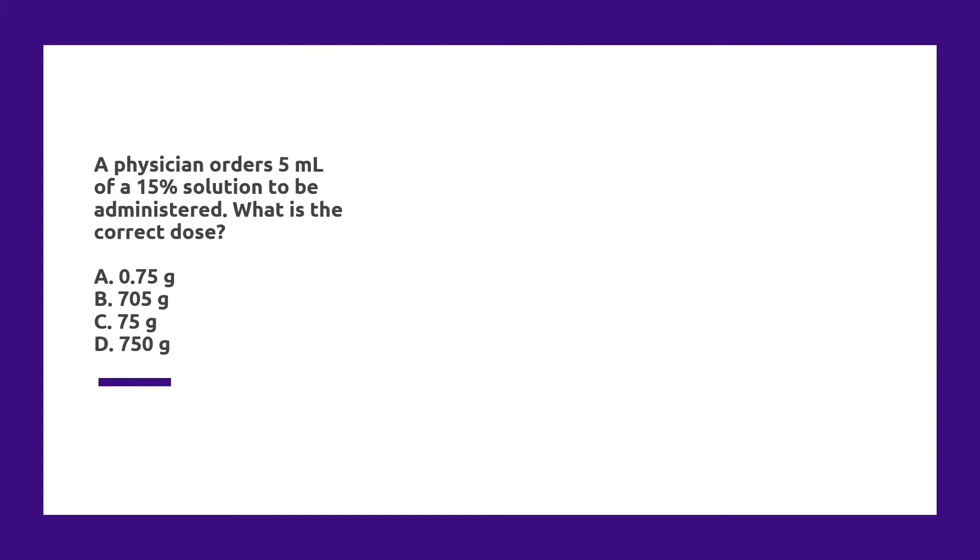So we know we have to get from five milliliters of a fifteen percent solution to the total number of grams that's contained in that order. And to start with you're going to need to understand what percentage means when you're expressing a concentration of a solution.